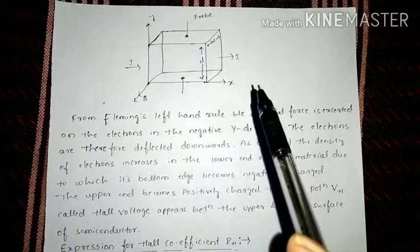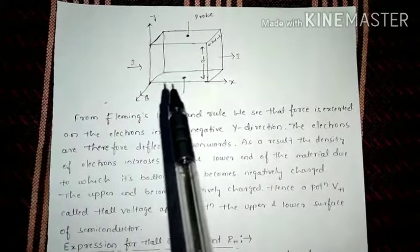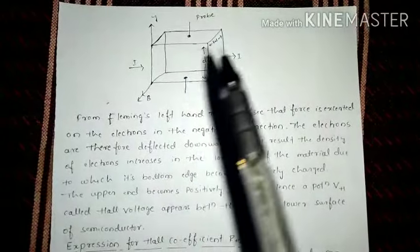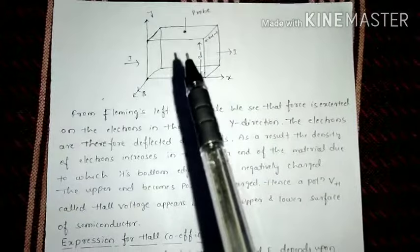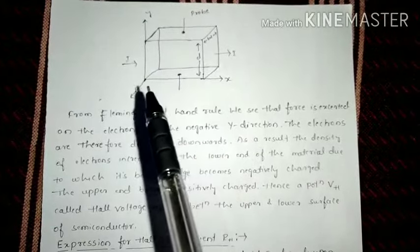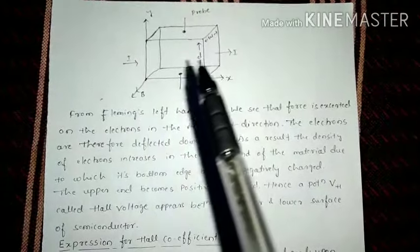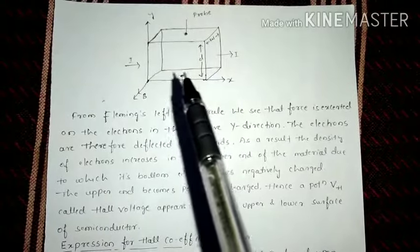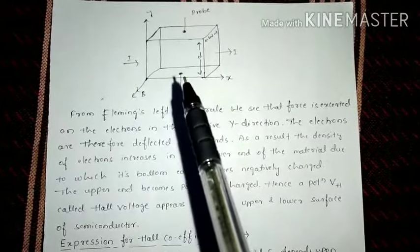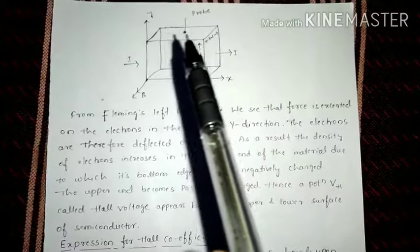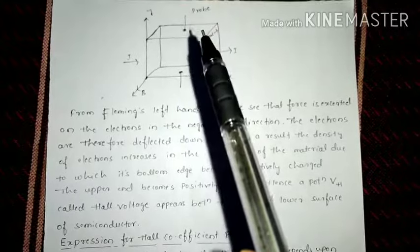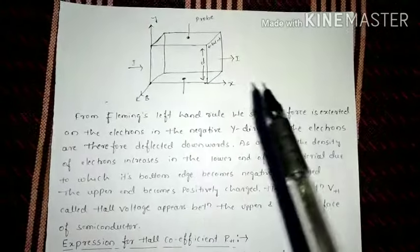In summary: when current flows along the X coordinate in a semiconductor and an external magnetic field is applied along the Z coordinate, the electrons experience the Lorentz force, which pushes them downward along the negative Y axis. The accumulation of electrons at the lower surface makes it negatively charged and the upper surface positively charged, generating the Hall voltage VH.